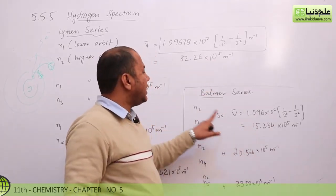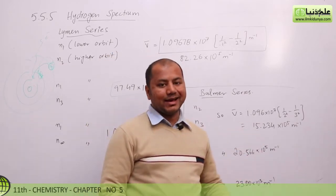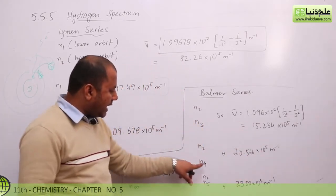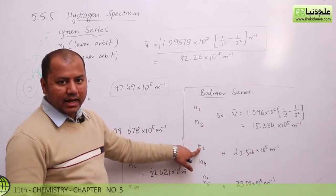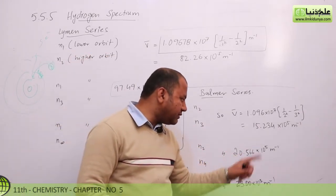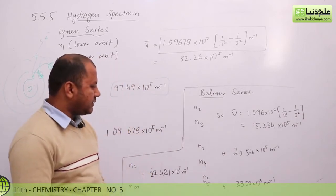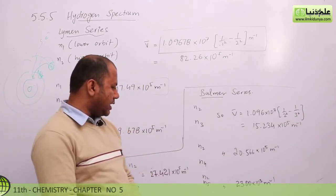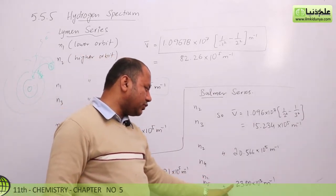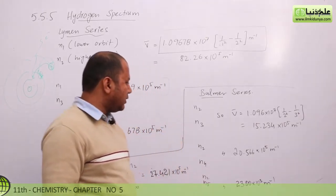It means that this is the wave number. If we jump from n4 to n2, then 20.56 times 10 to the power 5 per meter. And if we have n5 to n2, then 23.00 times 10 to the power 5 per meter.